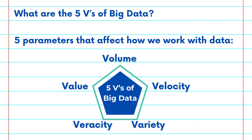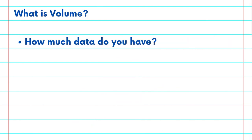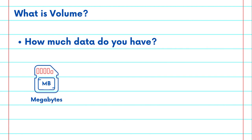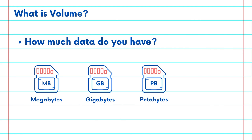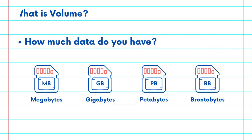The five Vs are volume, velocity, variety, veracity, and value. First, volume. How much data do you have? You could be dealing with megabytes, which is millions of bytes of data, or gigabytes, which is billions of bytes, or perhaps petabytes or even brontobytes.